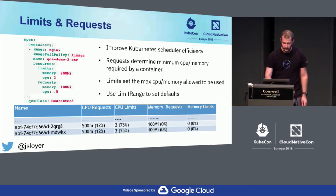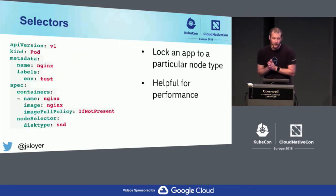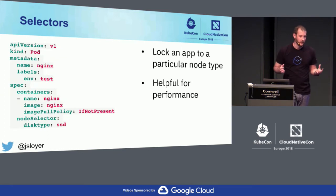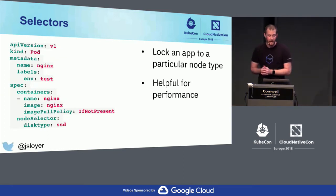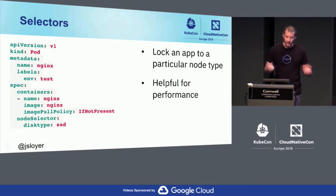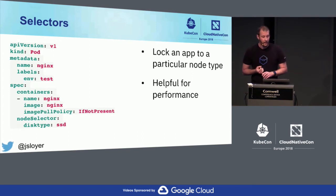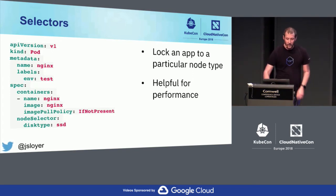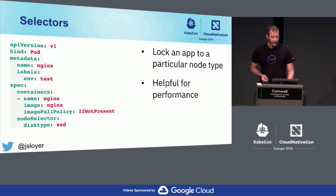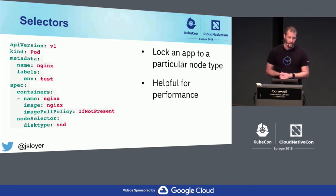The next thing in our tool belt is node selectors. If you have some really great nodes in your cluster with SSD drives, you can direct specific workloads to them. For example, Redis needs that disk speed. A good way to do that is using a node selector — you can have a label called disk type and specify the value, and Kubernetes will respect that scheduling for your worker nodes.